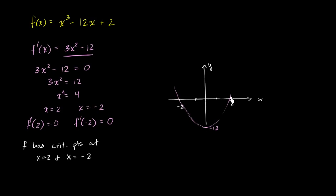What is the derivative doing at each of these critical points? At x equals negative 2, our derivative is crossing from being positive to being negative — that's our criterion for a critical point to be a maximum point. At x equals 2, we're crossing from a negative derivative to a positive derivative, which is our criterion for the function to have a minimum value at that critical point.